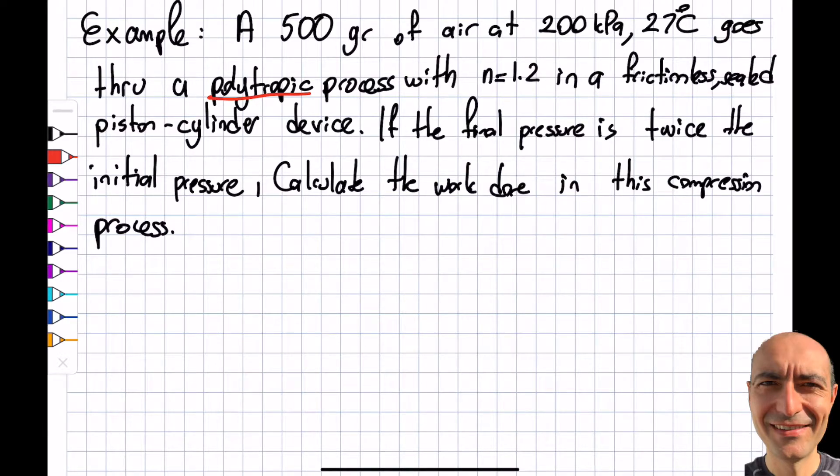Polytropic process with n equals 1.2 in a frictionless piston-cylinder device. If the final pressure is twice the initial pressure, calculate the work in this compression process. The key point is the work formula: W = (P2V2 - P1V1)/(1-n).